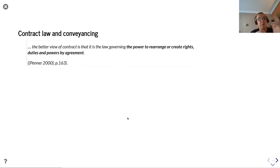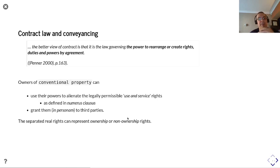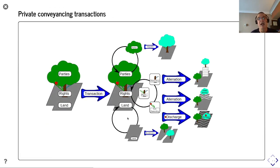Penner states that the better view of contract is that it is law governing the power to rearrange or create rights, duties, and powers by agreement. Owners of conventional property can use their powers to alienate the legally permissible use and service rights as defined in numerus clausus and then grant them in personam to third parties. These separated real rights can represent both ownership and non-ownership rights.